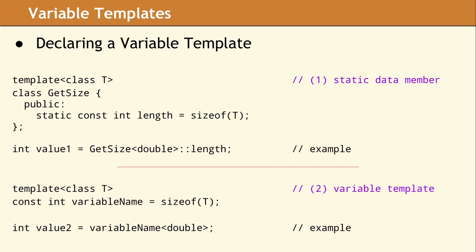In this code, it is length, but it could have been anything. The second example uses a variable template to accomplish the same task. The first two lines declare a variable template called variableName.